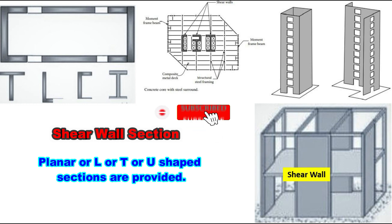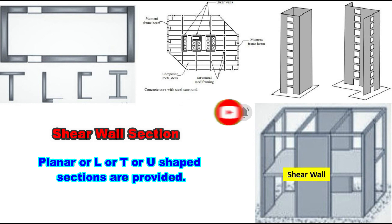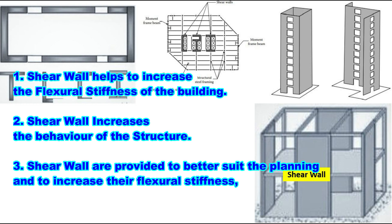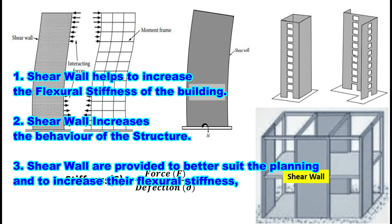So the structure should be provided with the right geometry and position of the shear wall, which is mostly at the center of the building. The shape and position of the shear wall is selected in such a way that it should help to increase the structural stiffness of the building, which in turn increases the overall behavior of the structure. The strength and stability of the building depends on the shape and position of the shear walls, so shear walls are provided to better suit the planning and to increase structural stiffness.